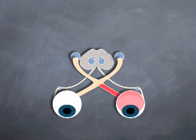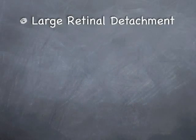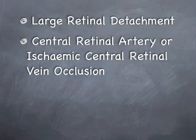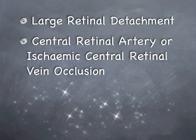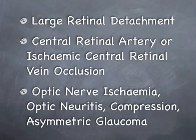Some examples of pathologies causing an RAPD: a large retinal detachment, central retinal artery or ischemic central retinal vein occlusion, optic nerve ischemia, optic neuritis, optic nerve compression or asymmetric glaucoma.